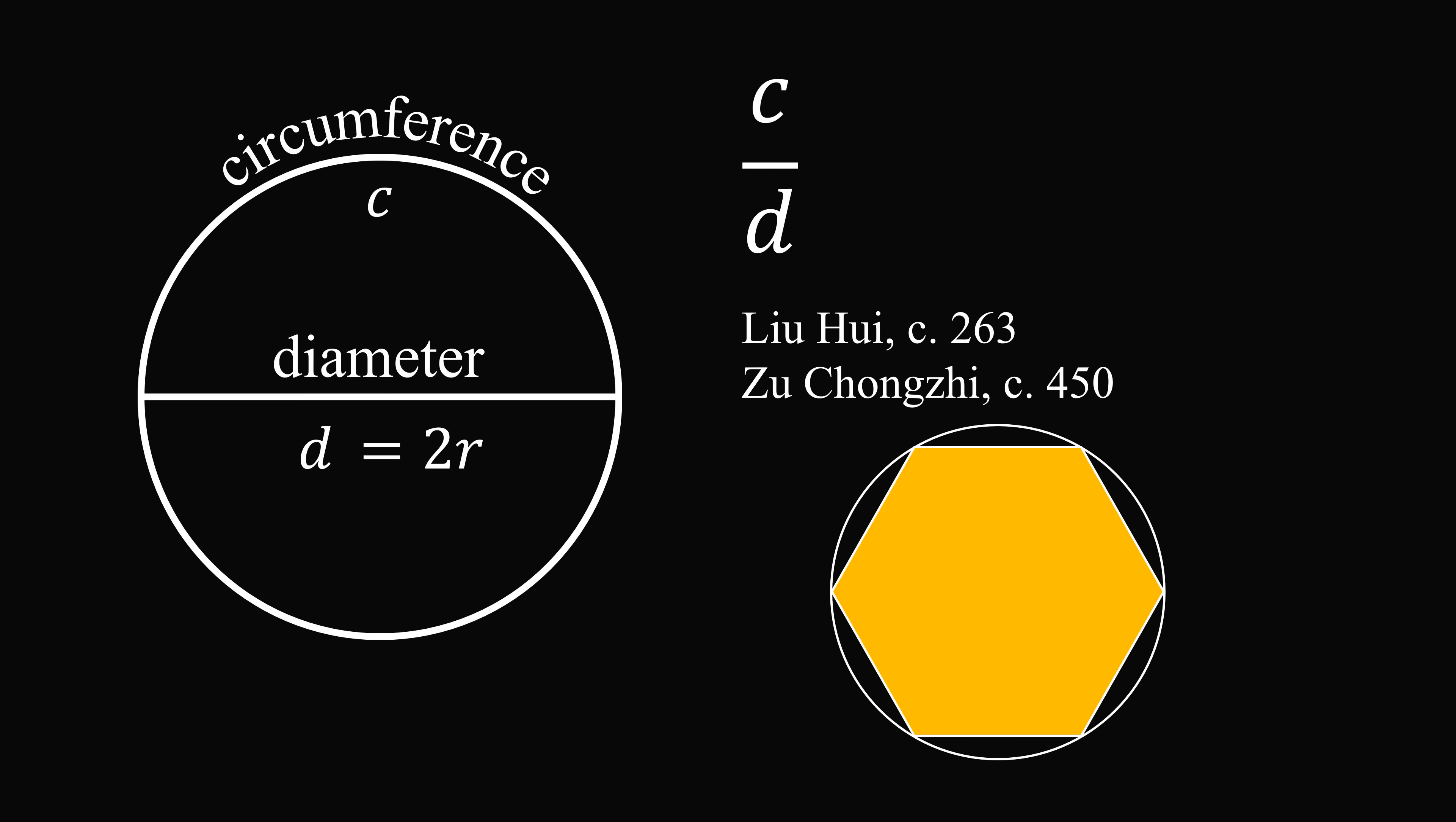which actually involved areas instead of lengths. Through a series of clever calculations, they came up with an approximation that pi was approximately 3.14159. This was the most accurate pi approximation for nearly 1000 years.